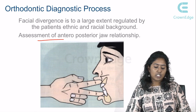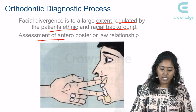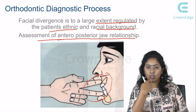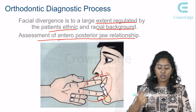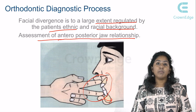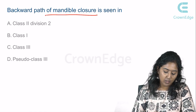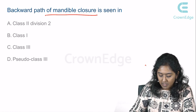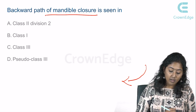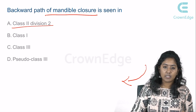In the orthognathic diagnostic process, facial divergence is regulated by the patient's ethnic and racial background. Assessment of anterior-posterior jaw relationship can be done by placing two fingers on the maxilla and mandible and asking the patient to open the mouth — observing the path of closure. A backward path of mandibular closure is seen in posterior divergence, which corresponds to Class 2 Div 2 malocclusion.